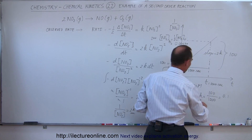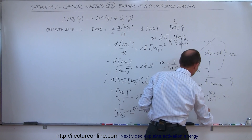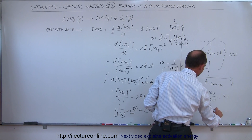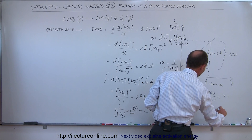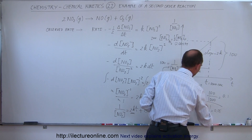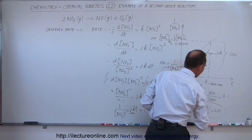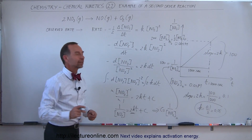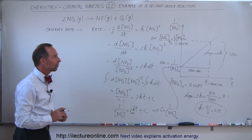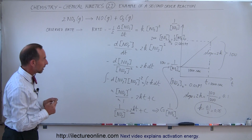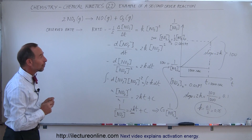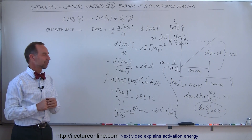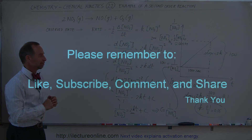That gives us 2K equal to 0.1, and therefore K equals 0.1 divided by 2, which equals 0.05. That is how you find the rate constant of such a reaction. And that is how we work with second order reactions.